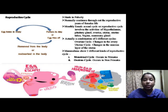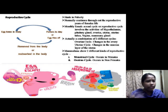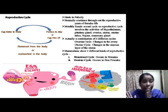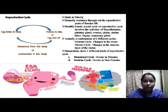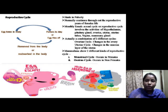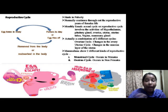The definition of the reproductive cycle is: it is the periodic changes that occur about once every lunar month, that is 28 days, in the female reproductive organs — the ovary and uterus — during the reproductive period from puberty, which means 11 to 14 years of age, until menopause. These include the ovarian cycle and the uterine cycle, starting in puberty and continuing throughout the reproductive years of women.